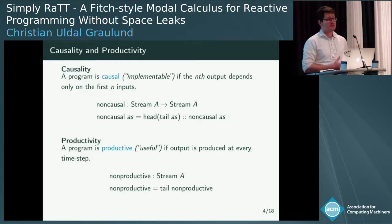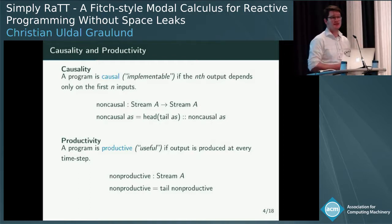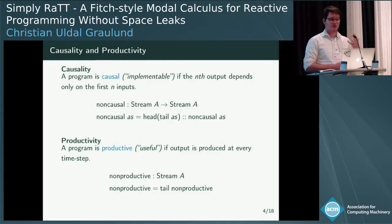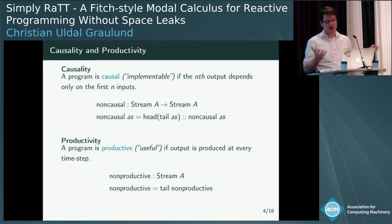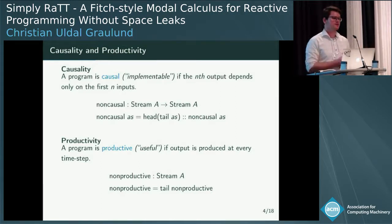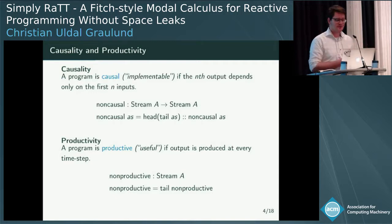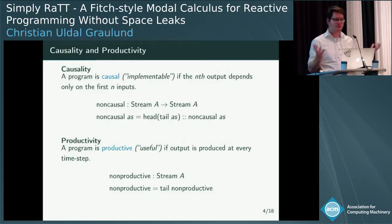Causality: a program is causal if the nth output depends only on the first n inputs. Here's something that's not causal — a program that reads a stream and tries to produce a stream where the first output element is the second input element. We can't do that in the reactive sense, because if programs are really reading from and producing to the environment, stream functions have to be causal to be implementable.